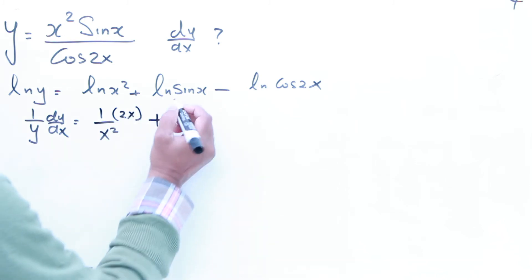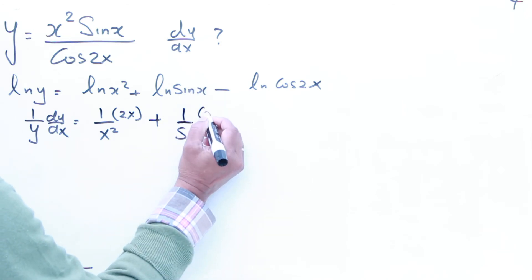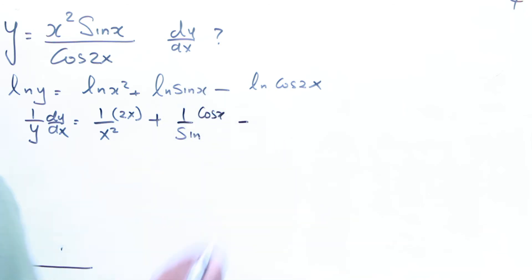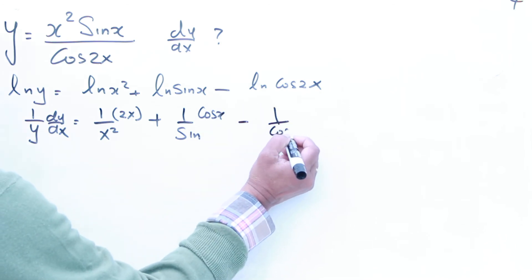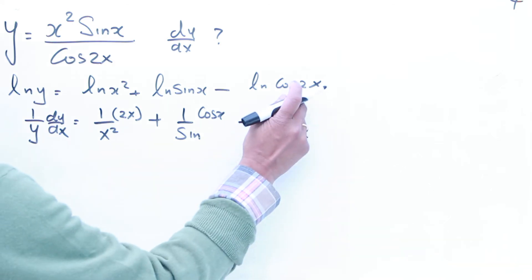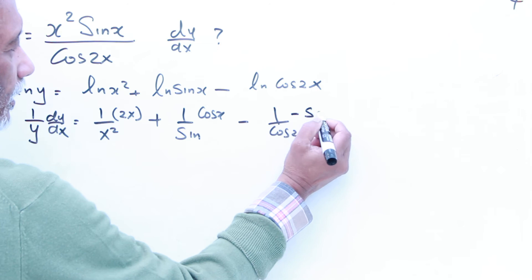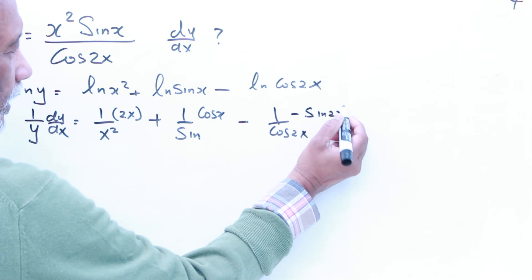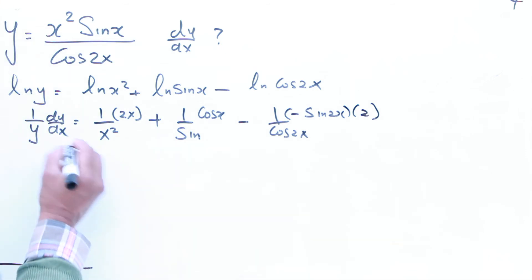Again, same thing here, 1 over sin x. Again, same rule, that will be cos x. Minus, this is ln, 1 over cos 2x. Then, again, you have to do sin 2x. Then, again, you have to multiply by 2.